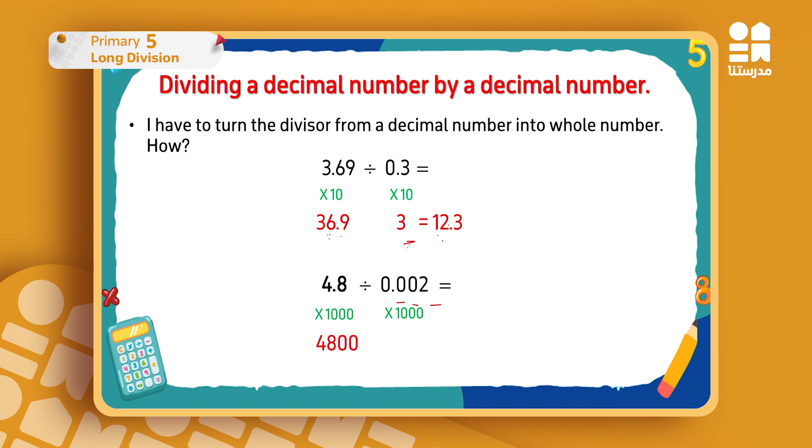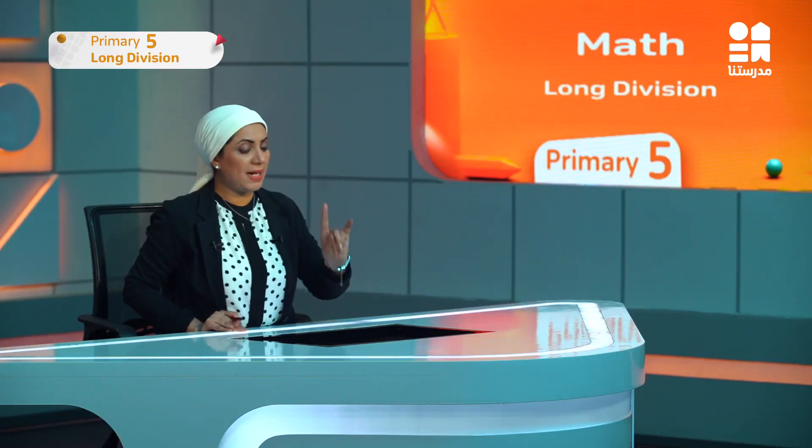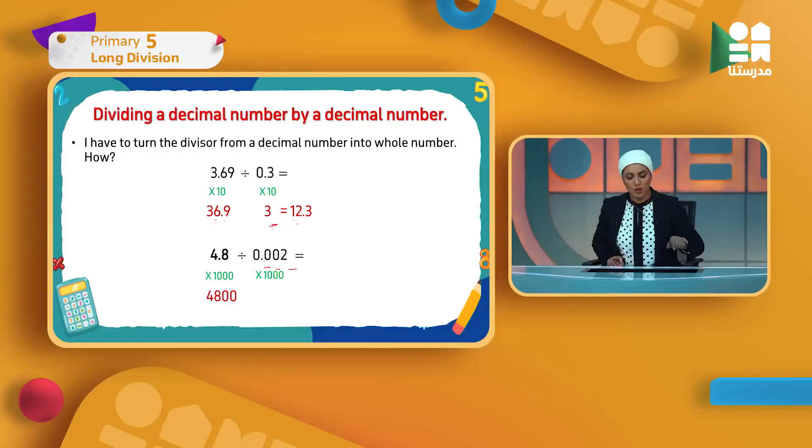The second one: 0.002, I have three zeros, so I'll move three decimal places. I'll move the decimal point completely out. I'll have 0002. We said all zeros in the whole number on the left-hand side have no use. So now my divisor becomes just 2. Now I'll divide them by each other. 48 divided by 2 is 24, and I will add the two zeros after it. So the answer is 2400.